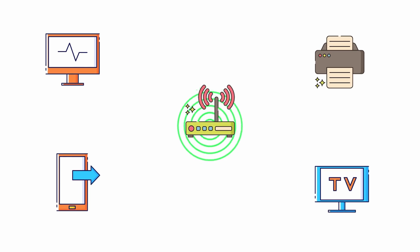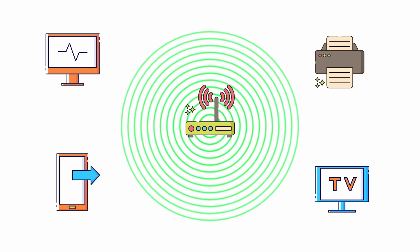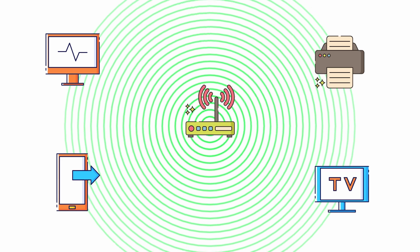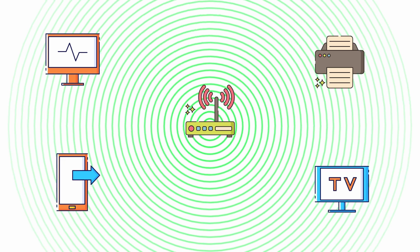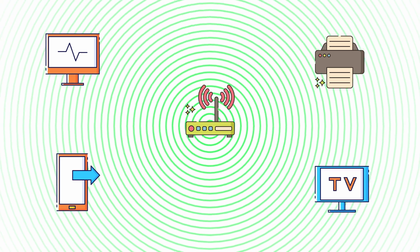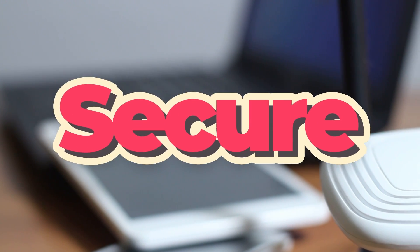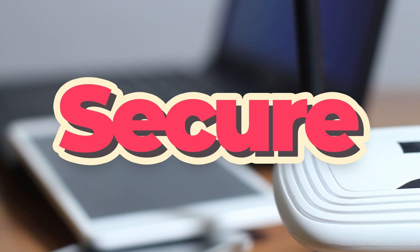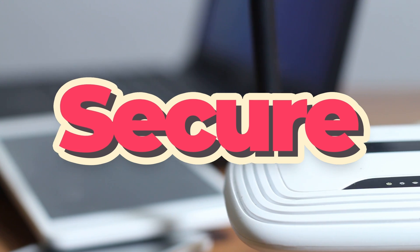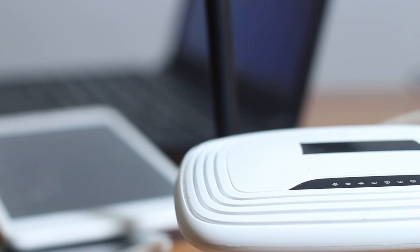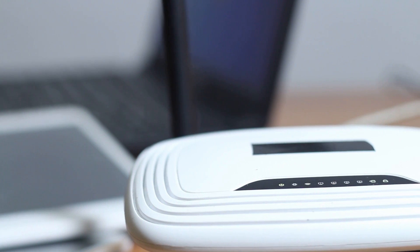A router also lets the connected devices talk to each other over a local network. Furthermore, it offers some protection to the individual devices connected to it by keeping them from being directly exposed to the internet.